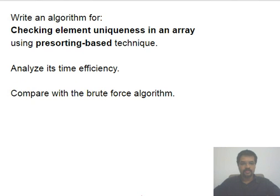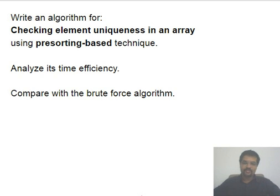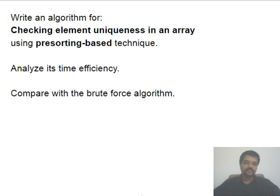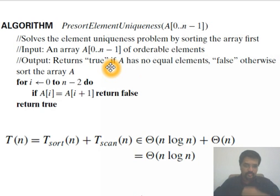Nevertheless, let's see examples where the pre-sorting method looks attractive. Here is the element uniqueness problem — determining whether all elements in an array are unique. The brute force way is to compare every pair of elements; if any pair has both elements the same, the array is not unique. This comparison of every pair gives a worst-case time complexity of Θ(n²).